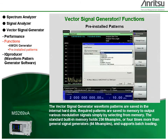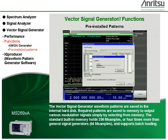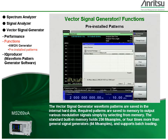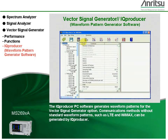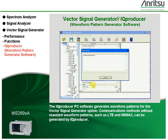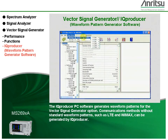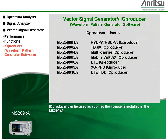The standard built-in memory holds 256 mega-samples — four times more than general signal generators — and supports batch loading. The IQ Producer PC software generates waveform patterns for the vector signal generator option. Communications methods without standard waveform patterns, such as LTE and WiMAX, can be generated by IQ Producer. IQ Producer can be used as soon as the license is installed in the MS269XA.